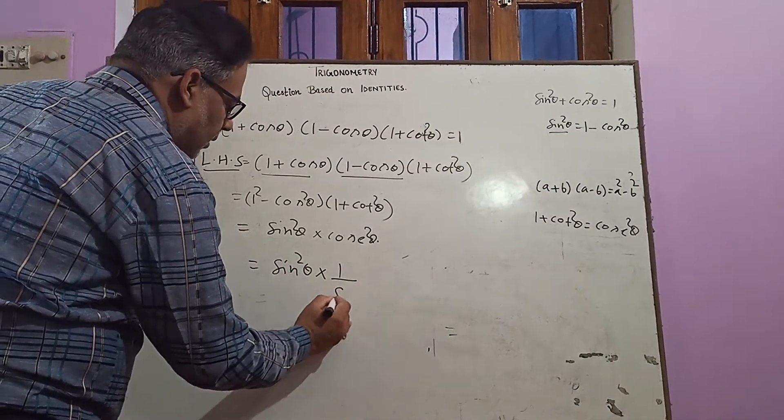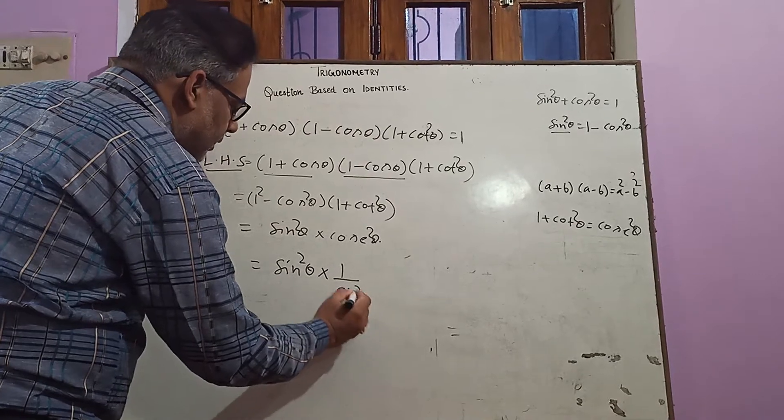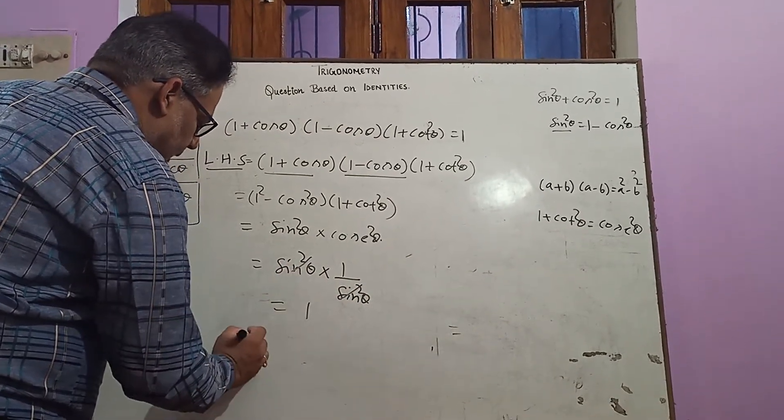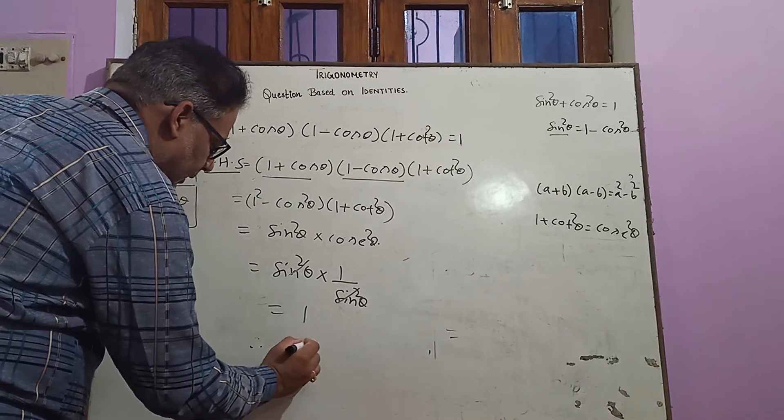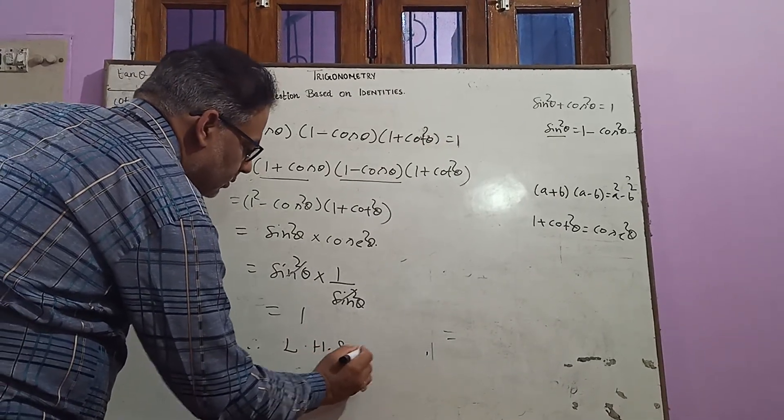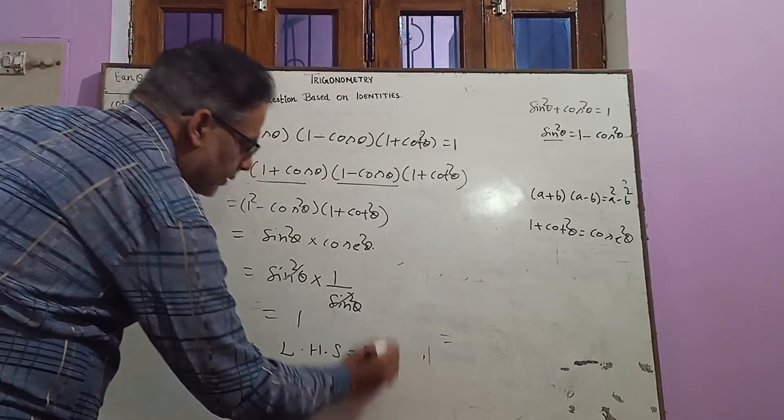and one upon sin²θ. Now you can cancel out so we'll get here 1 and at last we say that left hand side equals to right hand side.